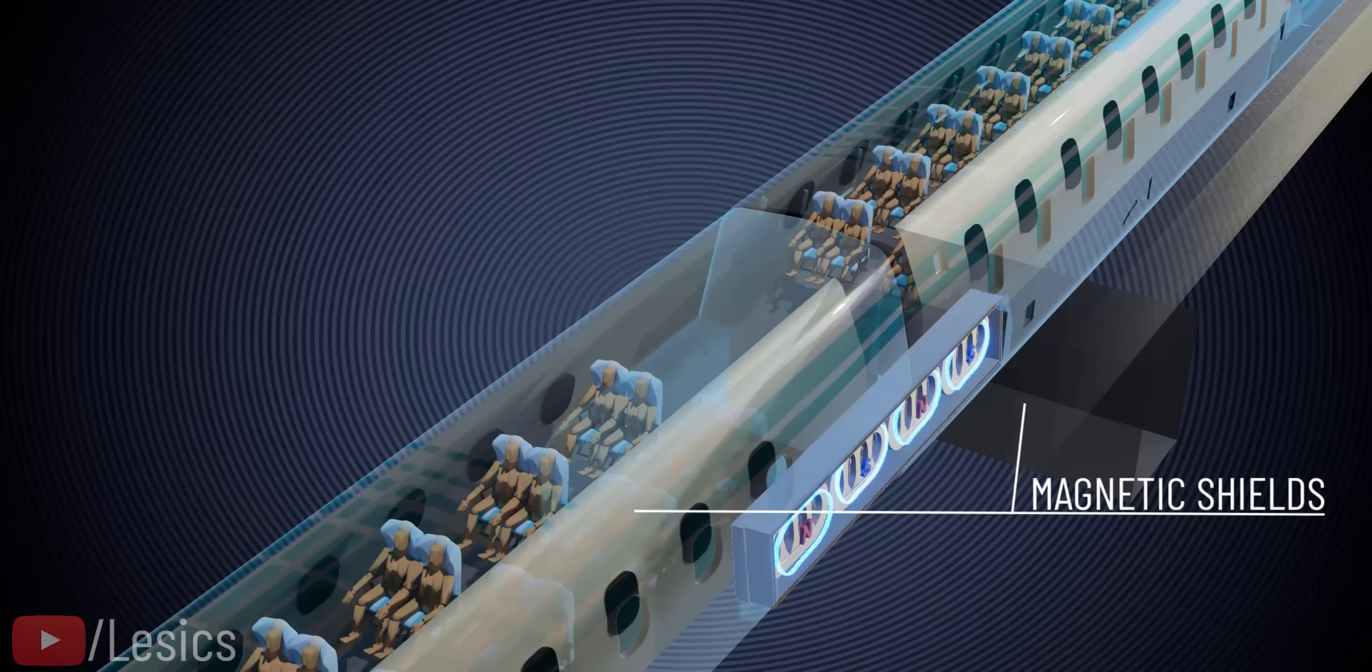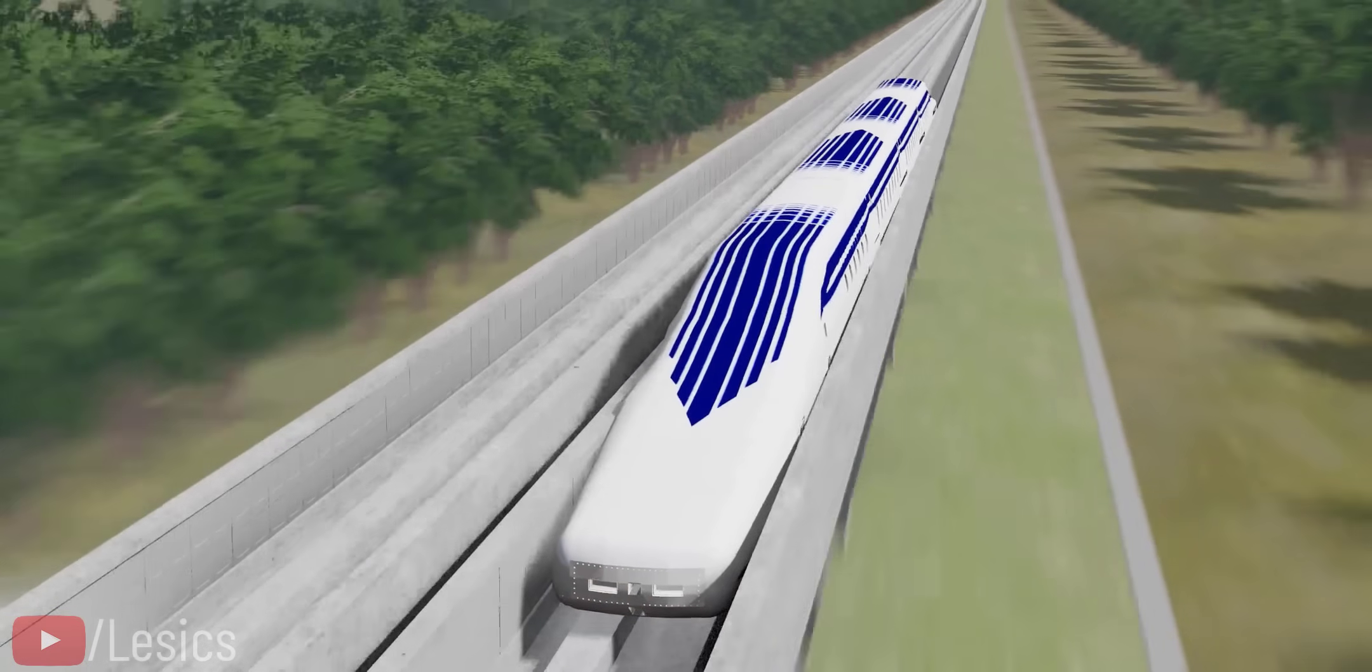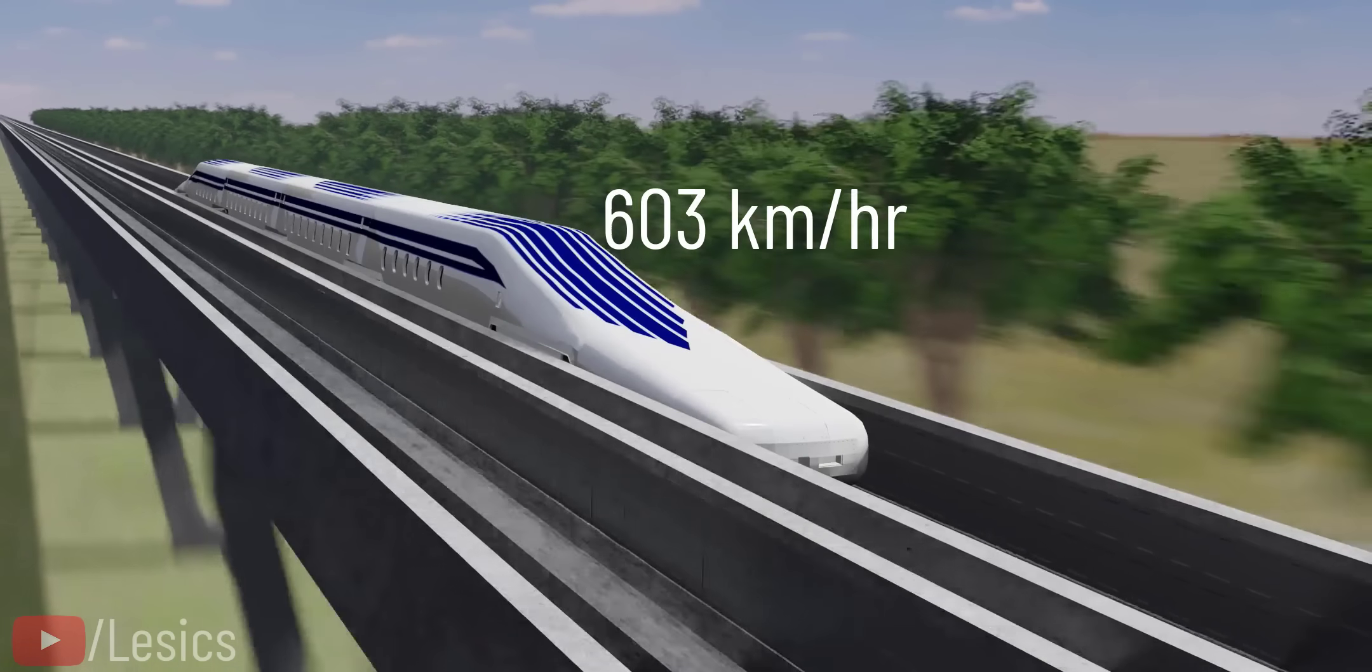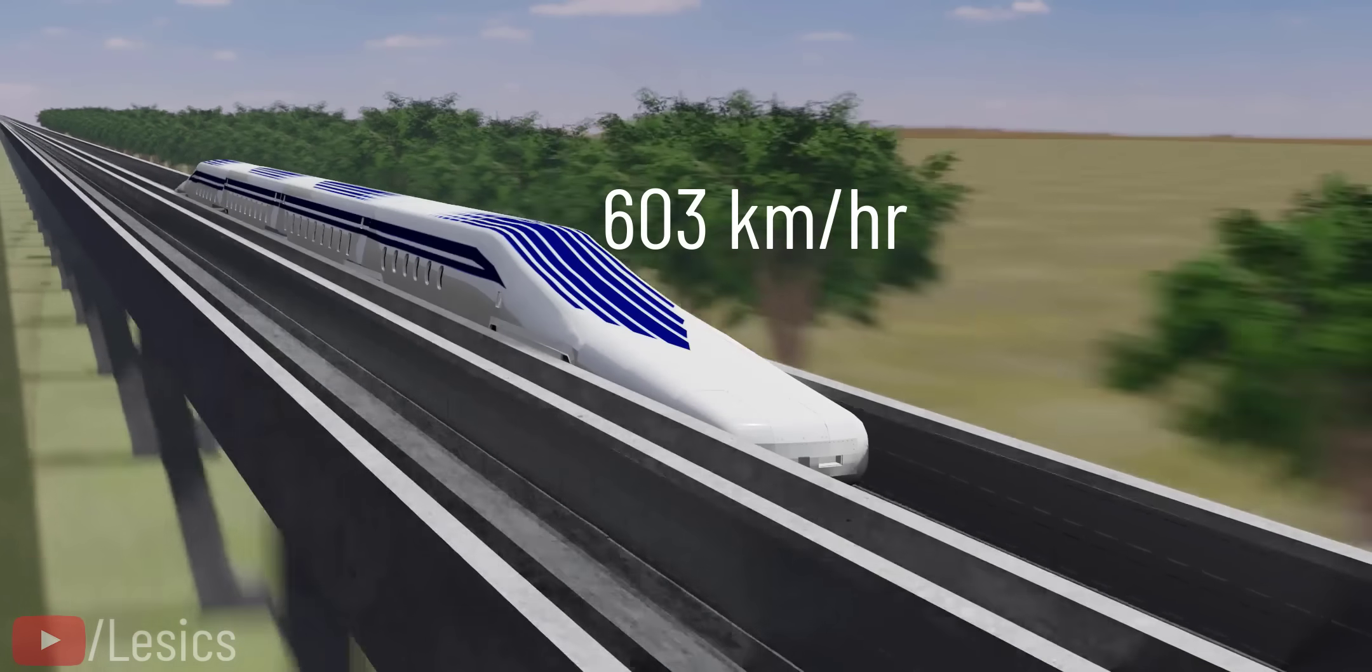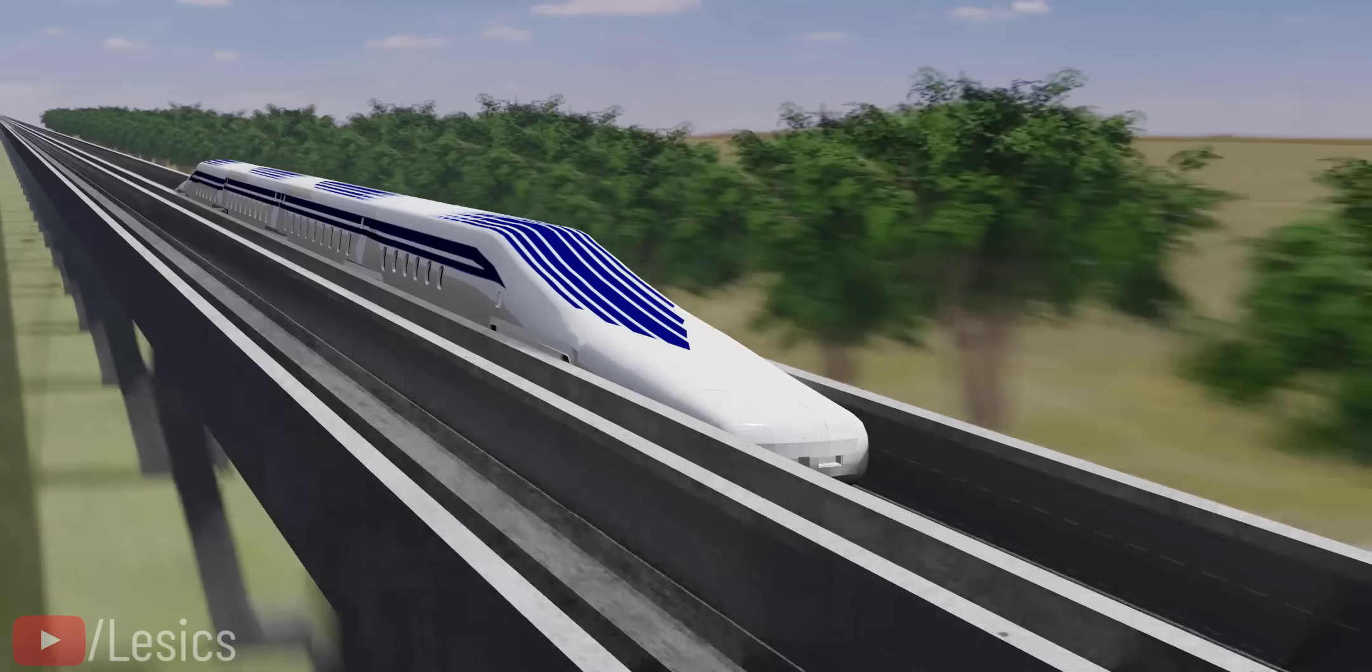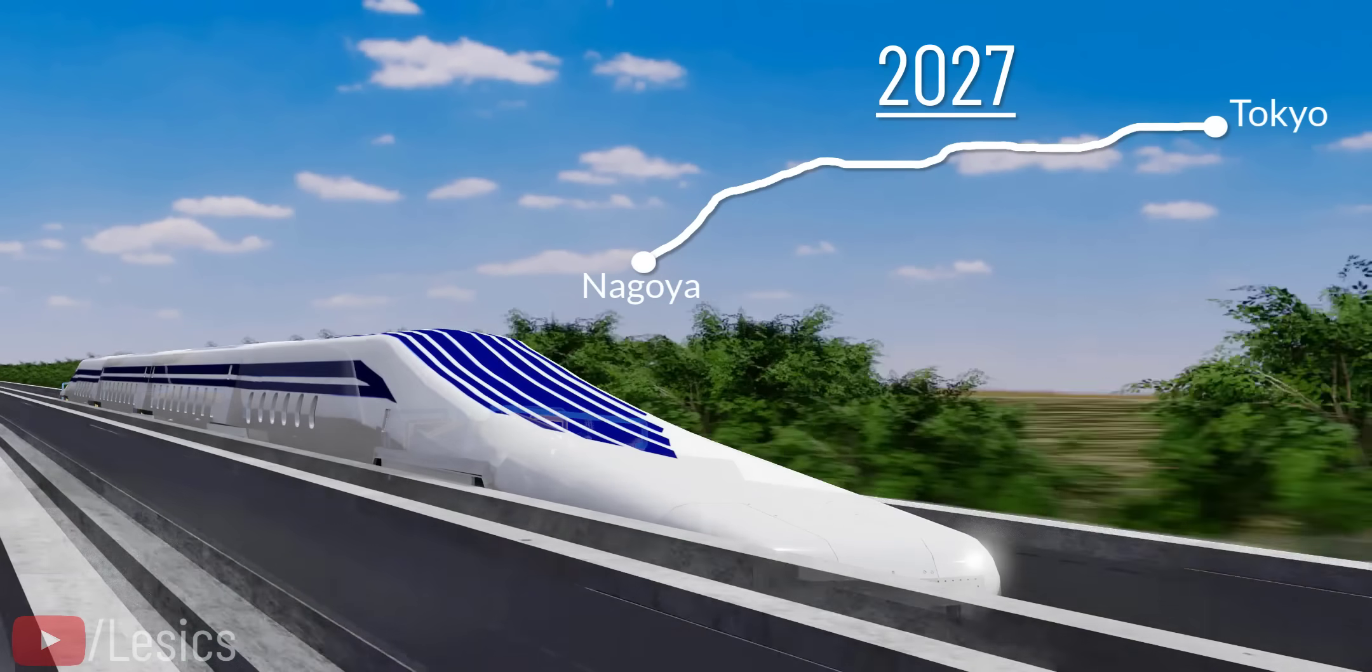SC Maglev train test rides began in 1997 on the Yamanashi Maglev test line. The test rides were quite successful and continued for 10 consecutive years without missing a single day. A world record speed of 603 km per hour was achieved during this time. These highly positive results encouraged the Japanese authorities, and they granted permission to conduct commercial SC Maglev operations between Tokyo and Nagoya by the year 2027, with more SC Maglev trains to follow.